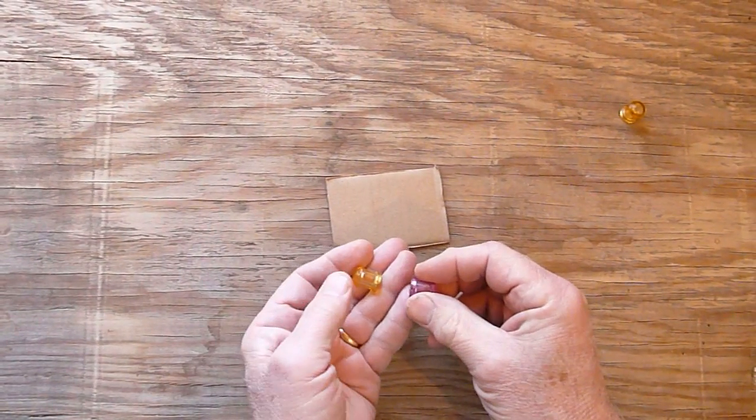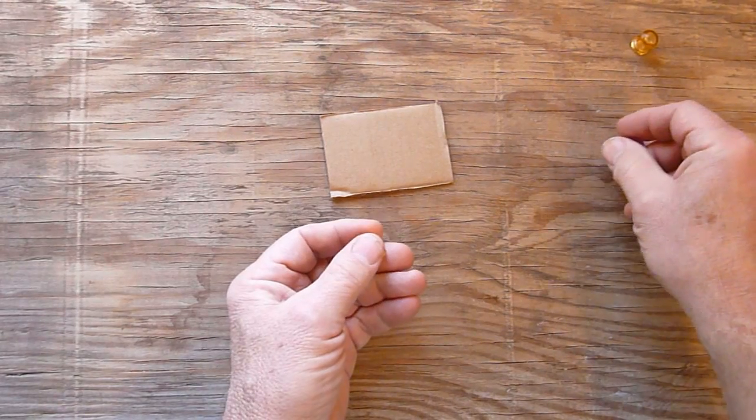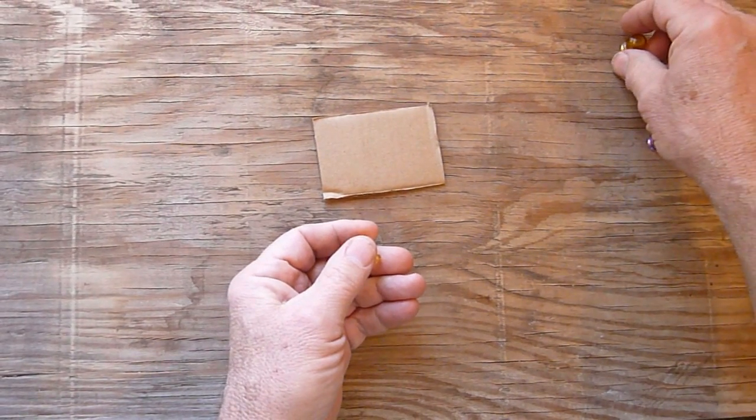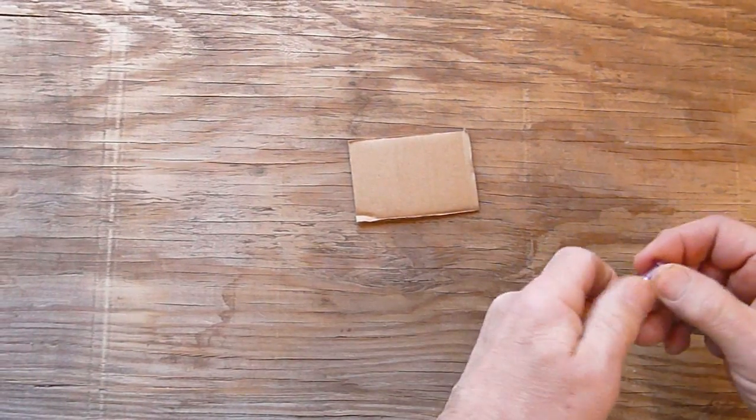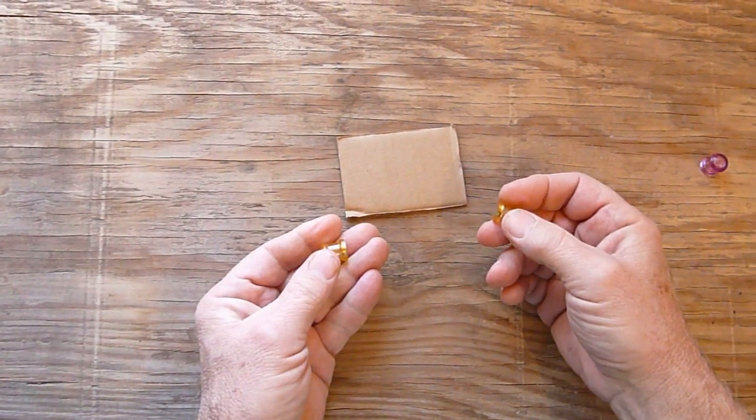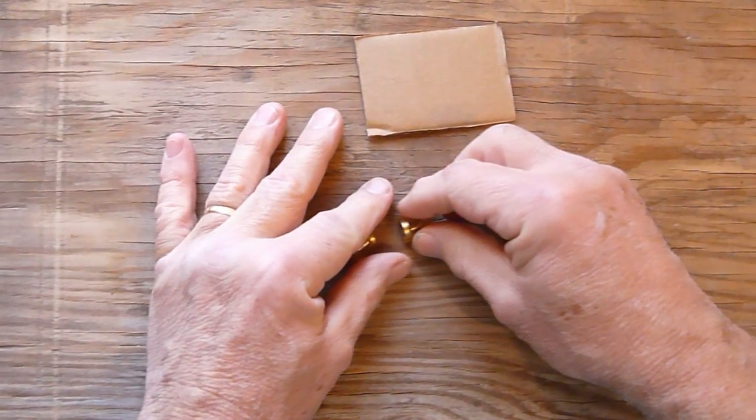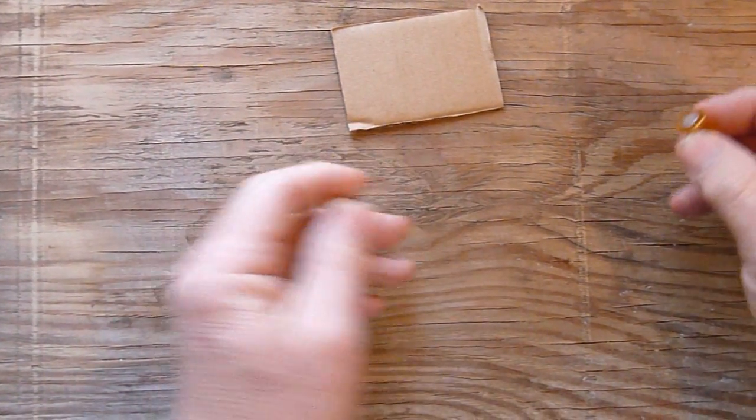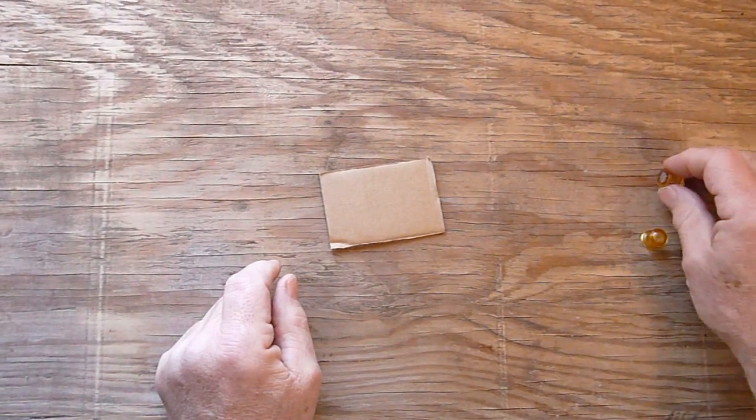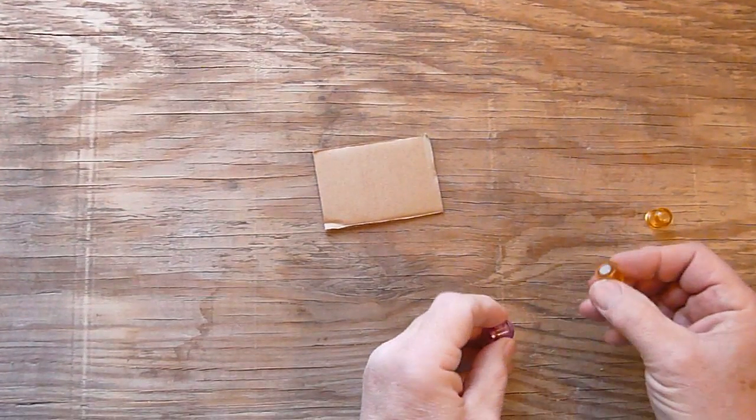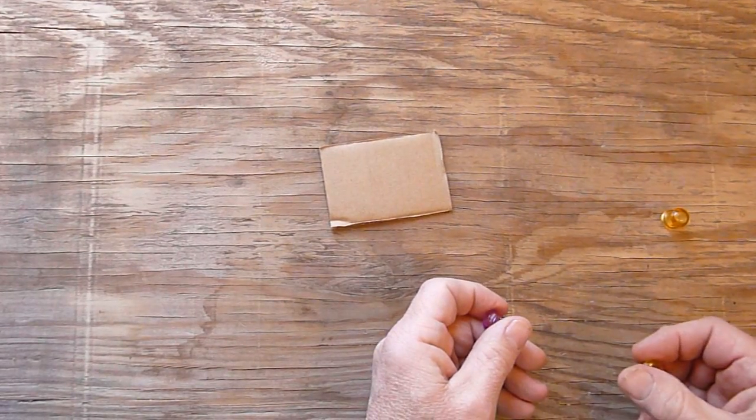Notice how these attract each other. It is interesting to note that not every two refrigerator magnets attract each other. Only the different colored ones do. These are the different colored ones. For instance, these two, which have the same color, don't attract each other. In fact, they repel each other. What happens is that magnets have two poles, North and South. Like poles repel and unlike attract. This is no problem with fridge magnets because both are attracted to the steel in the refrigerator door.